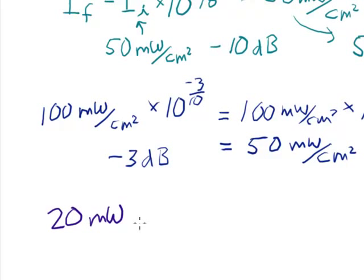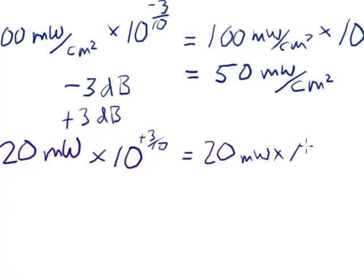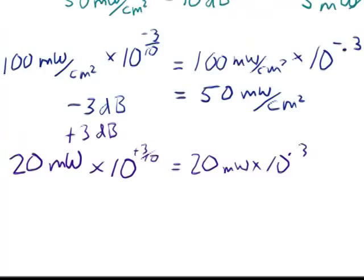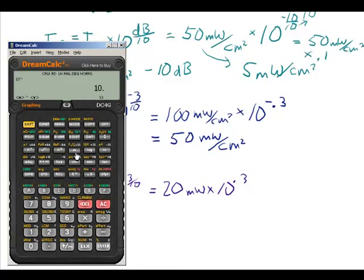And I'm going to increase this by, let's increase this by 3 decibels. Okay, so my formula then becomes 10 to the plus 3 over 10. And so that's 20 milliwatts times 10 to the 0.3. And let's look at that. So 10 raised to the 0.3 power, the 3 tenths power.